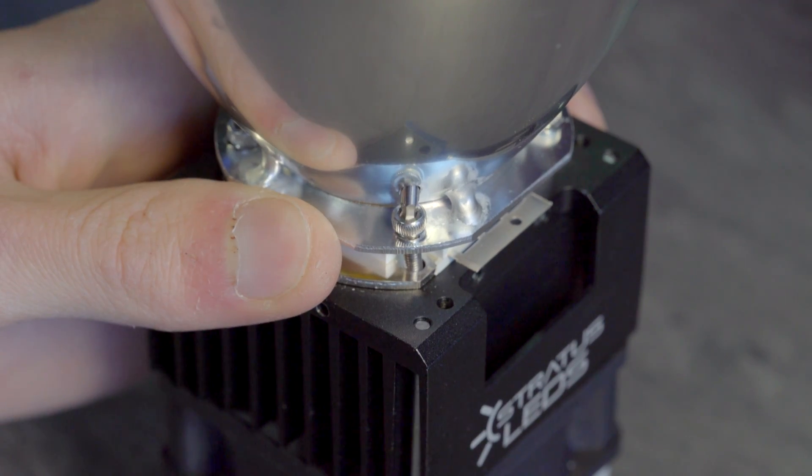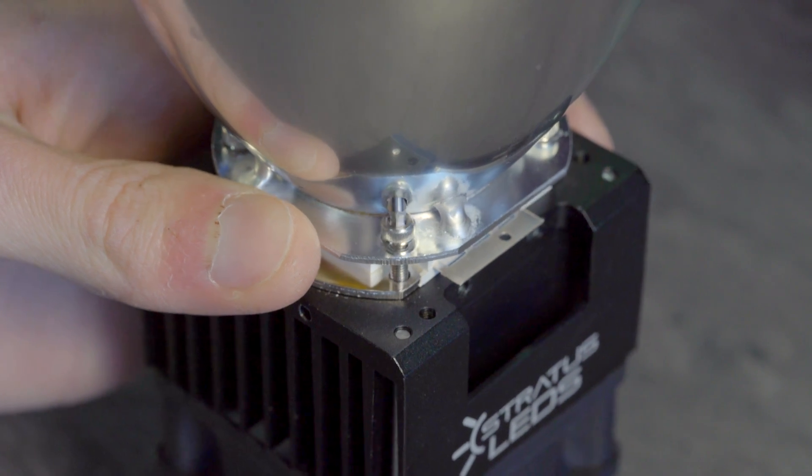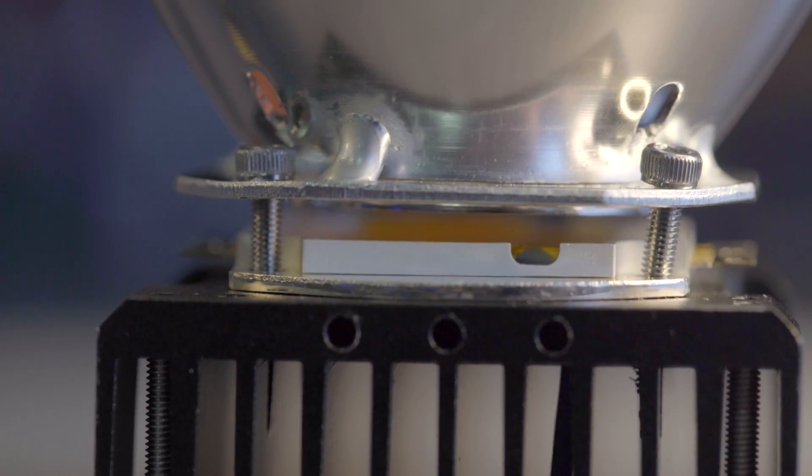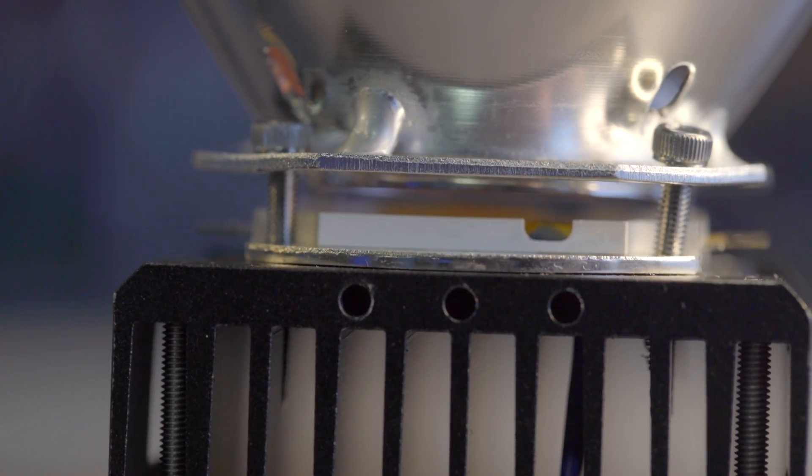Next, use a 2.5mm ball head hex driver to thread the screws into the heat sink about one turn each. Keep the parabolic reflector pulled up off the LED emitter.